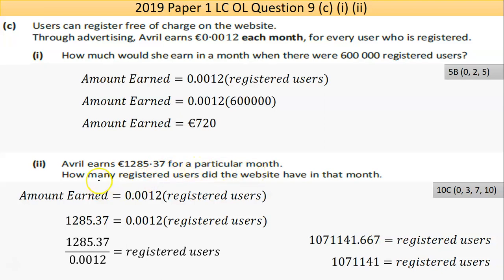Part C(ii): Avril earns 1,285 euros 37 cent for a particular month - how many registered users did the website have in that month? Using the same formula: amount earned equals 0.012 times the number of users. We know the earnings, the number of users is unknown. Substituting in and bringing 0.012 across - dividing on the left - into the calculator I get one million... actually 107,141 point 667. You can't have a fraction of a user, so round it down.